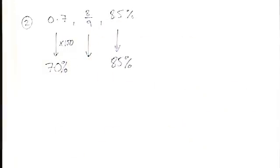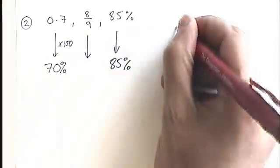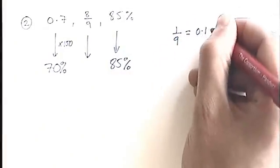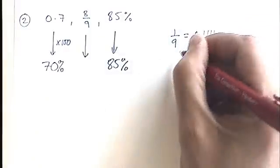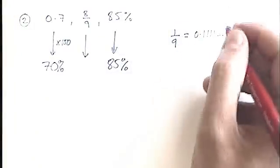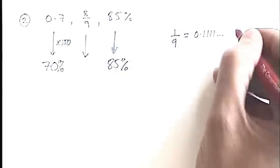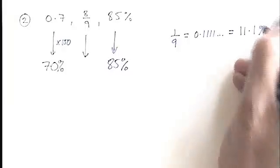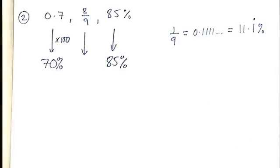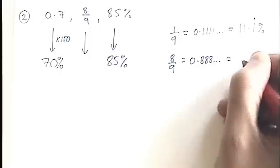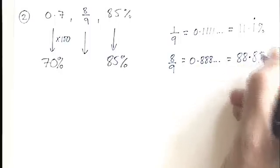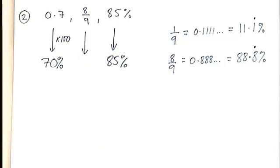Last of all we've got 8 ninths. This one is tricky — people don't tend to remember their ninths, but actually ninths are fairly straightforward. 1 divided by 9 gives you 0.1̄ recurring, which is 11.1̄ recurring percent. So if I've got 8 of those, that's going to be 0.8̄ recurring, which is 88.8̄ recurring percent. Alternatively, on a calculator paper you can simply do 8 divided by 9 to get your decimal and then times by 100.